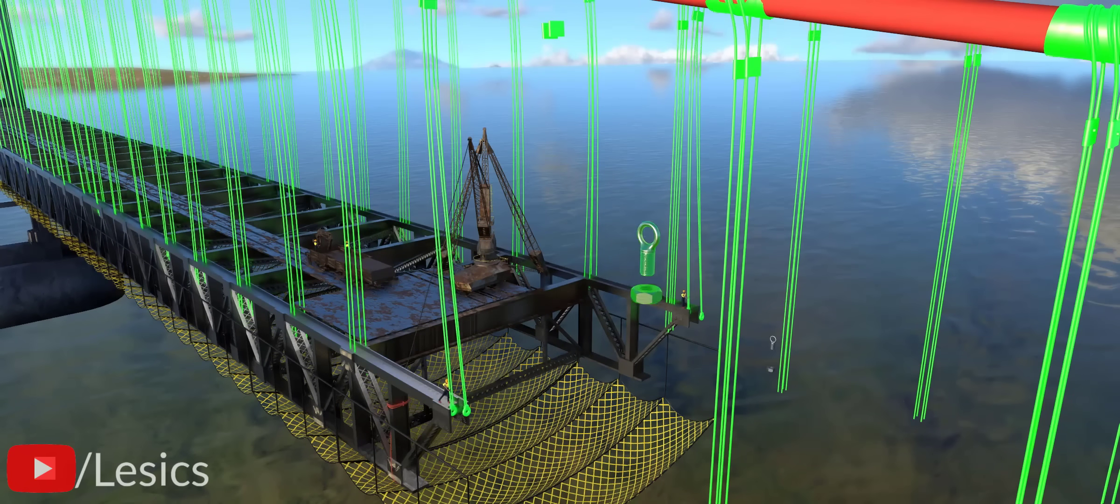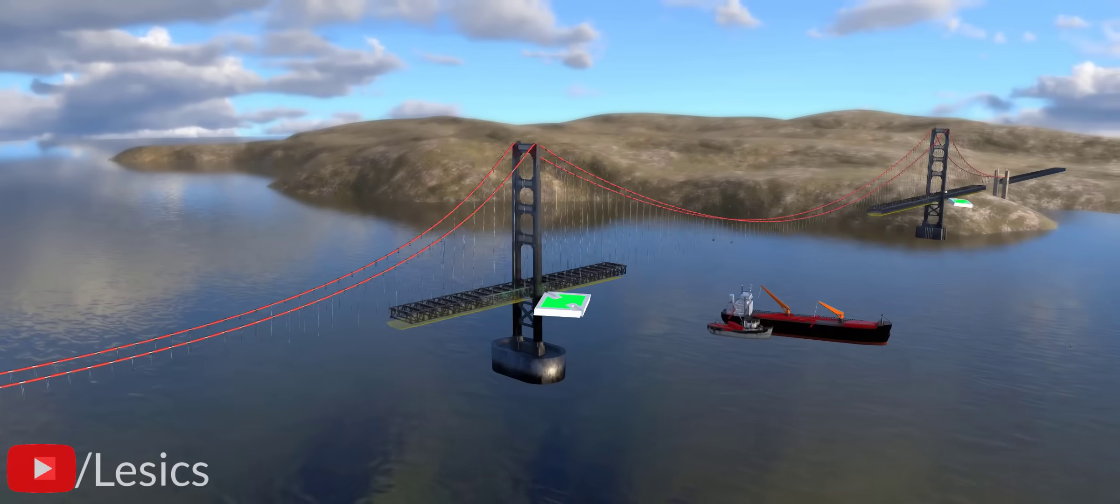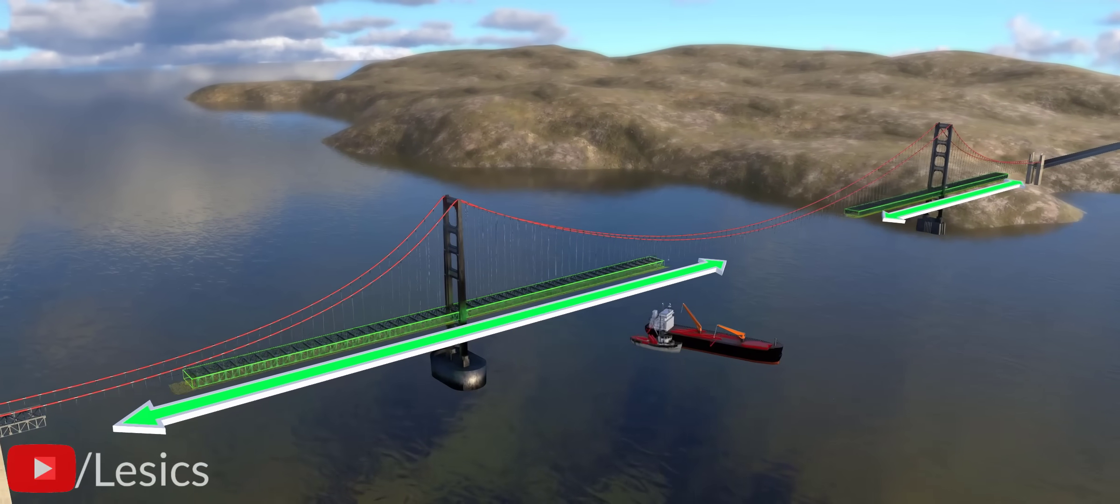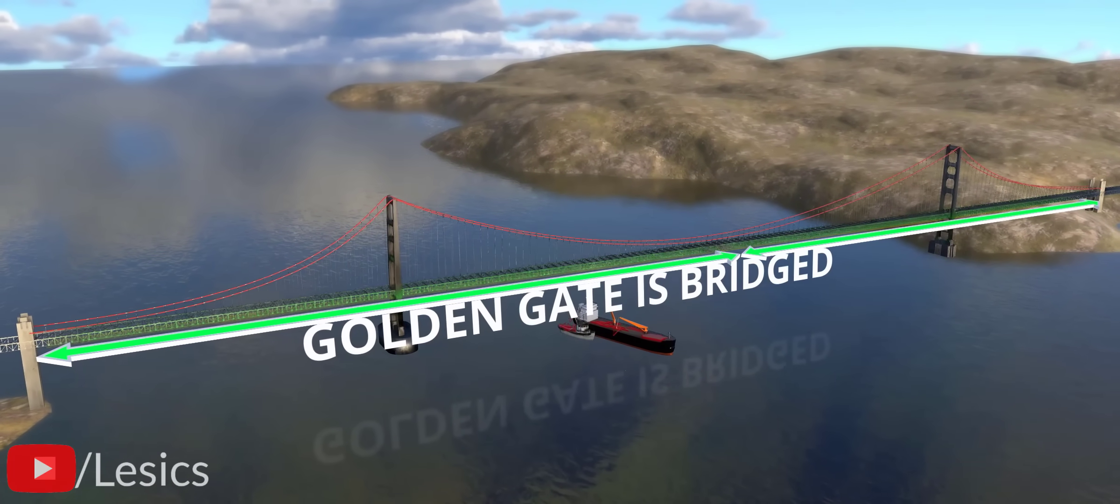Moreover, to maintain equal loading on the cable, workers had to assemble the system simultaneously and equally in two directions for each tower. Thus, the golden gate was bridged.